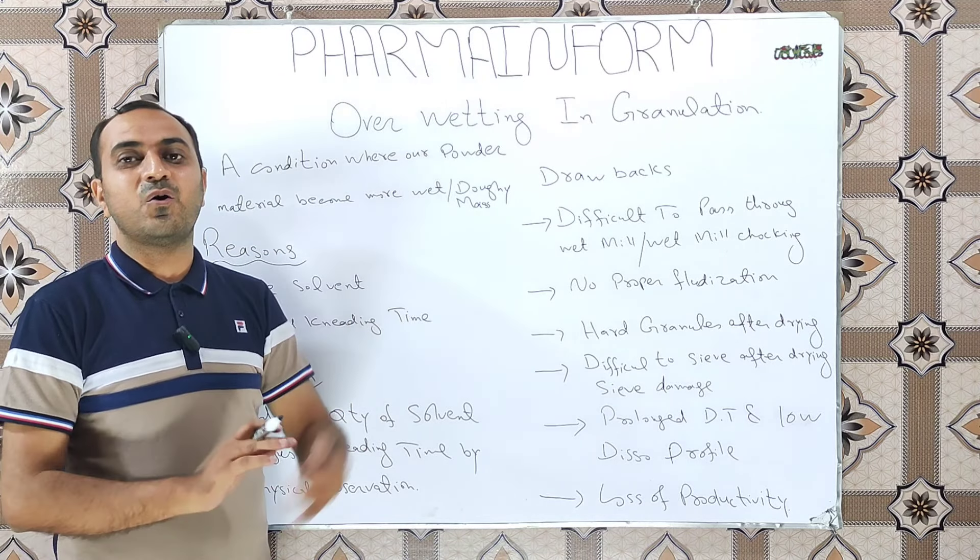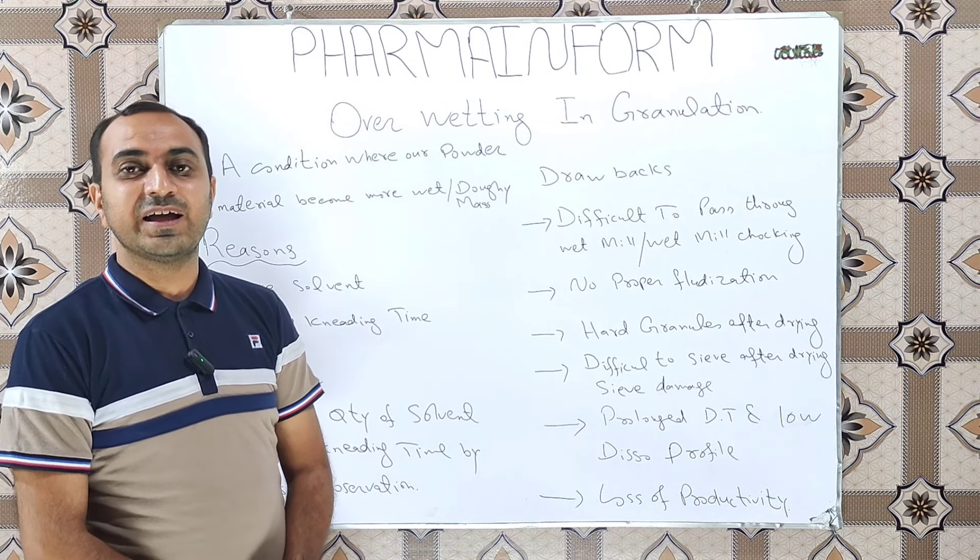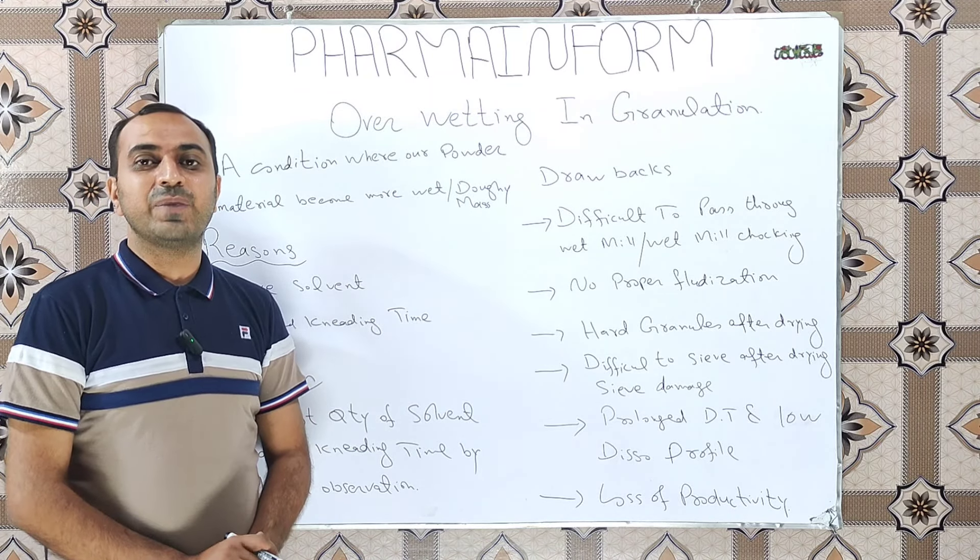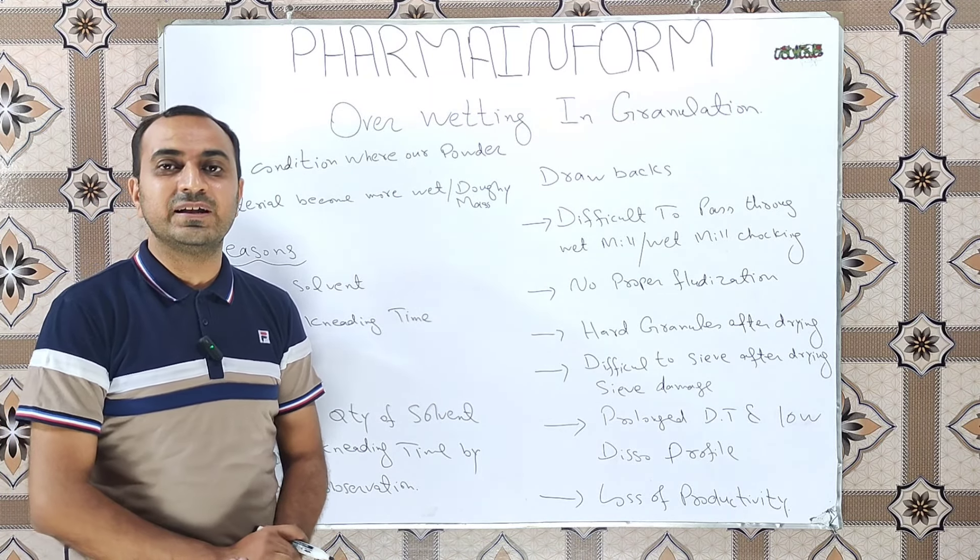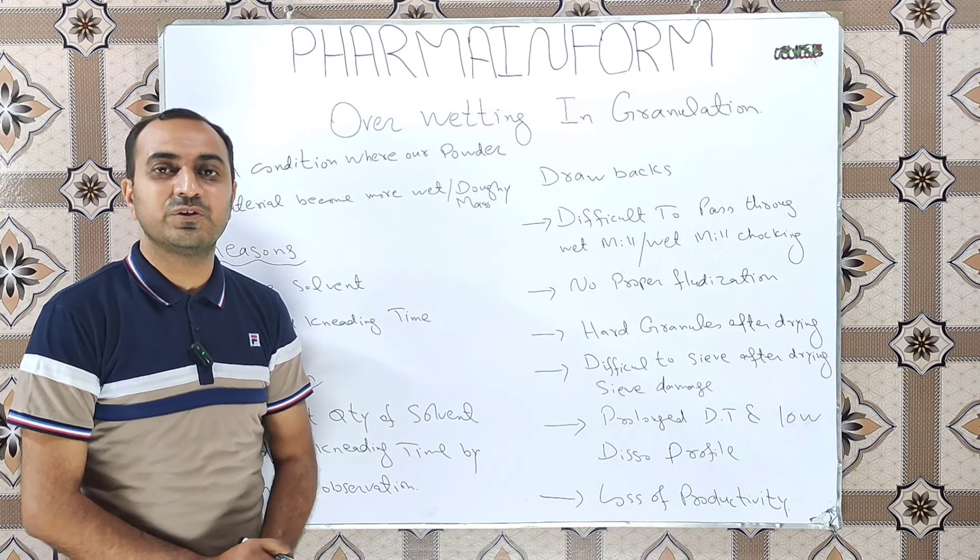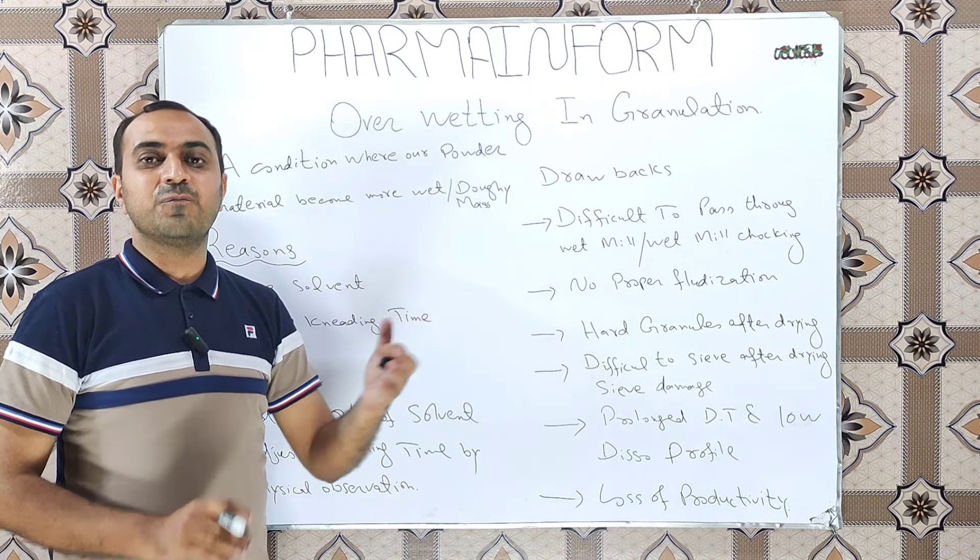So what is overwetting? Overwetting is the condition where our powder materials become more wet, or a doughy mass is produced during the kneading stage of wet granulation. If you are not familiar with various stages of wet granulation, the link to a playlist of wet granulation steps and stages is provided in the description. Must watch the complete video.